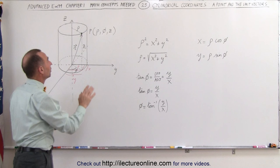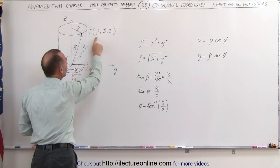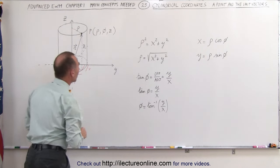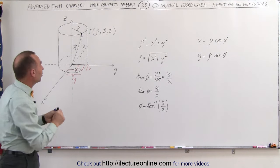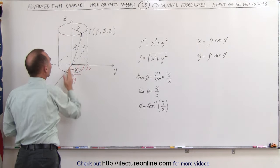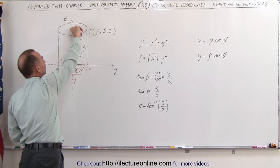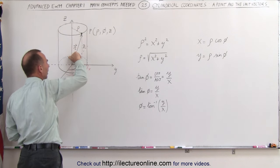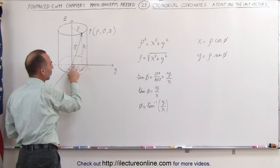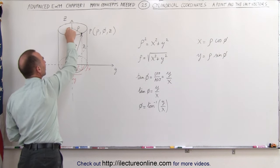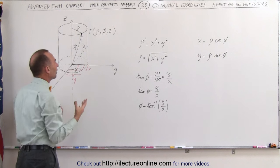Notice the three variables that we have: rho, phi, and z. What do they mean? Well, rho represents the distance from the z-axis to the point. So from here to here, that distance is rho. Notice when I project that onto the XY plane, I have the rho down here as well. So that's simply the distance from the z-axis to the point in space.